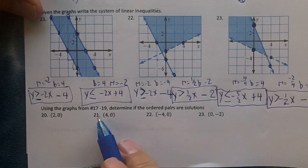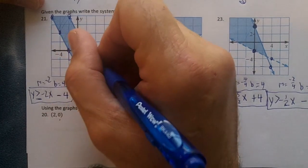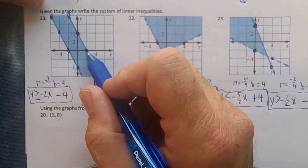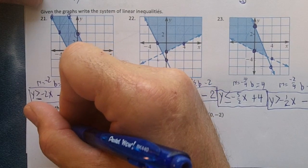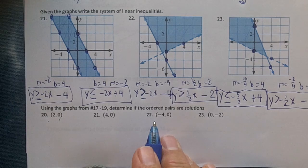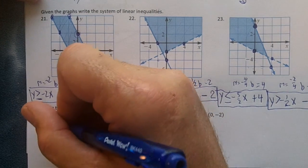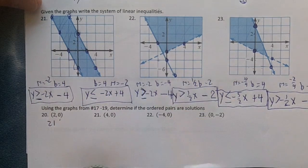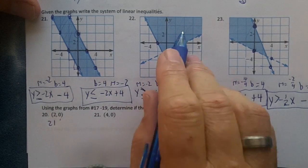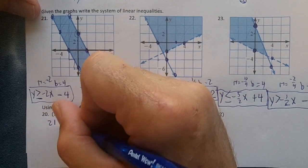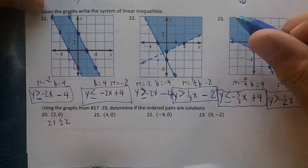Now we're going to use them to see if they're solutions. Point (2, 0) is right here — it is on a solid line, so that is a solution to problem 21. For problem 22, (2, 0) is in the shaded part, so it's an answer to 22. And (2, 0) is not an answer to 23.